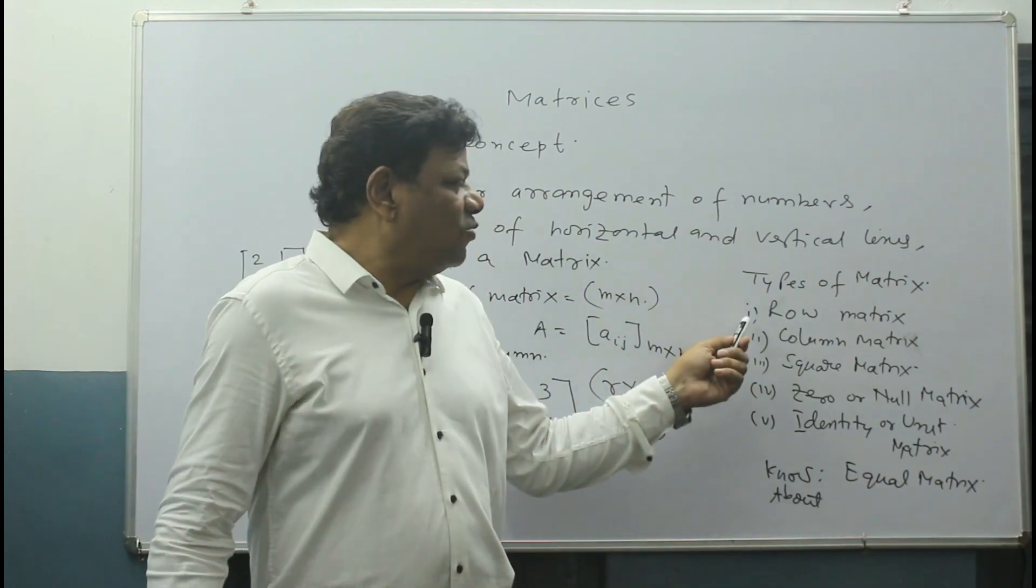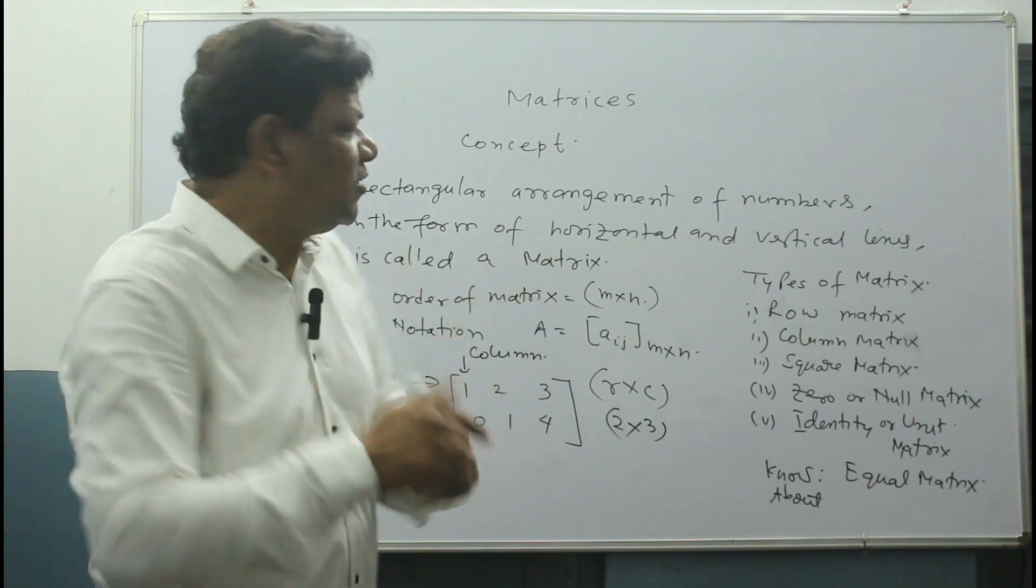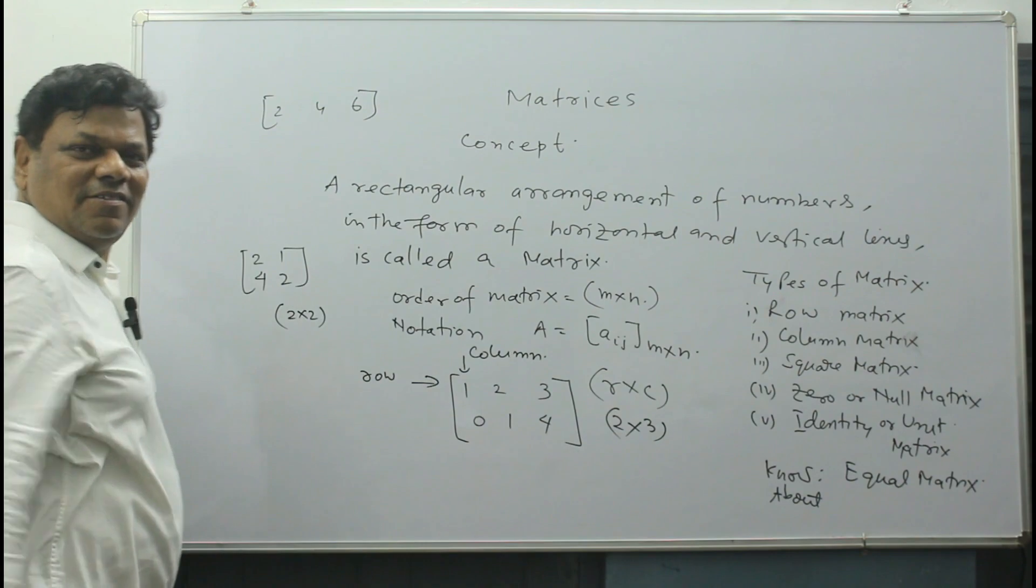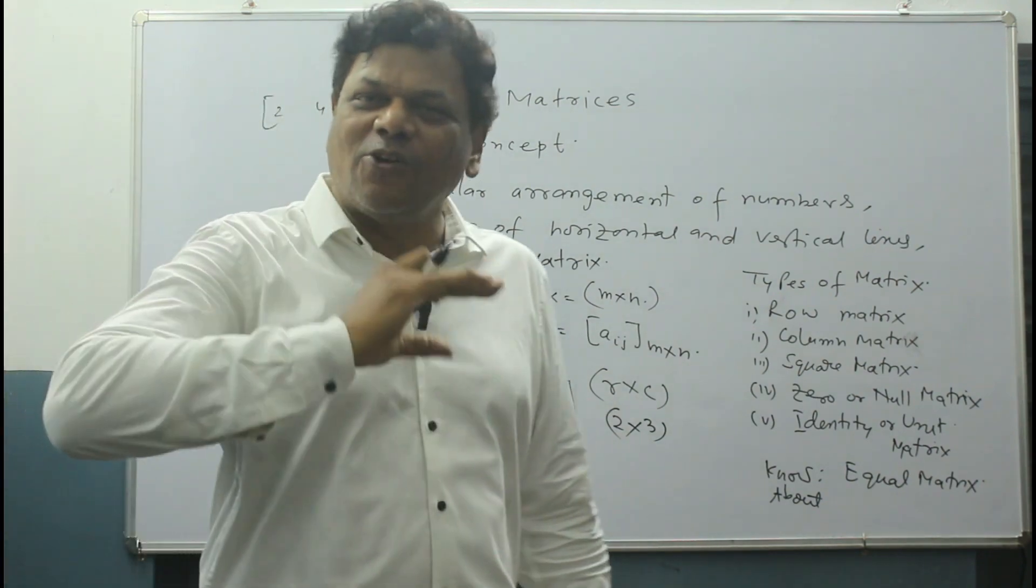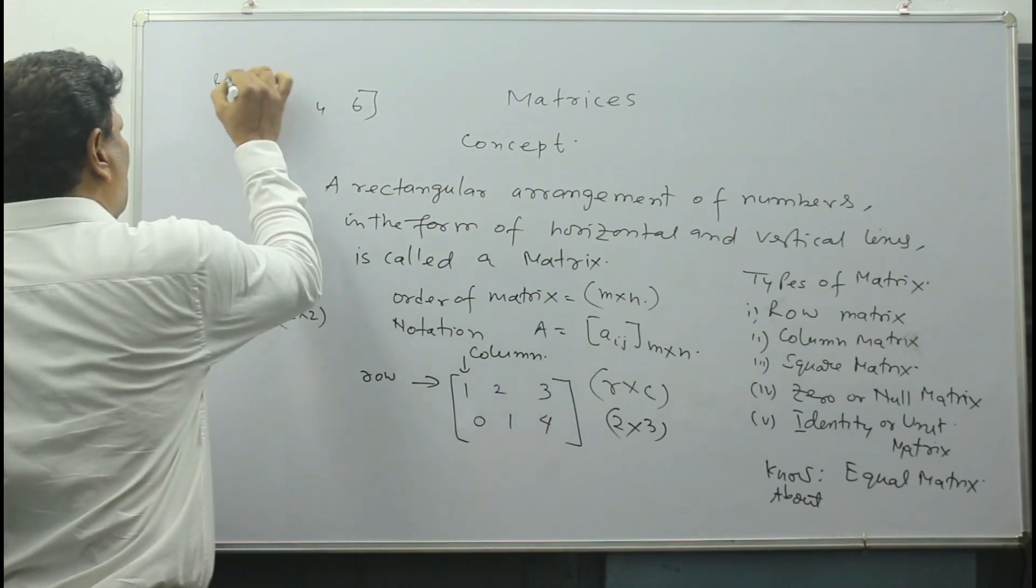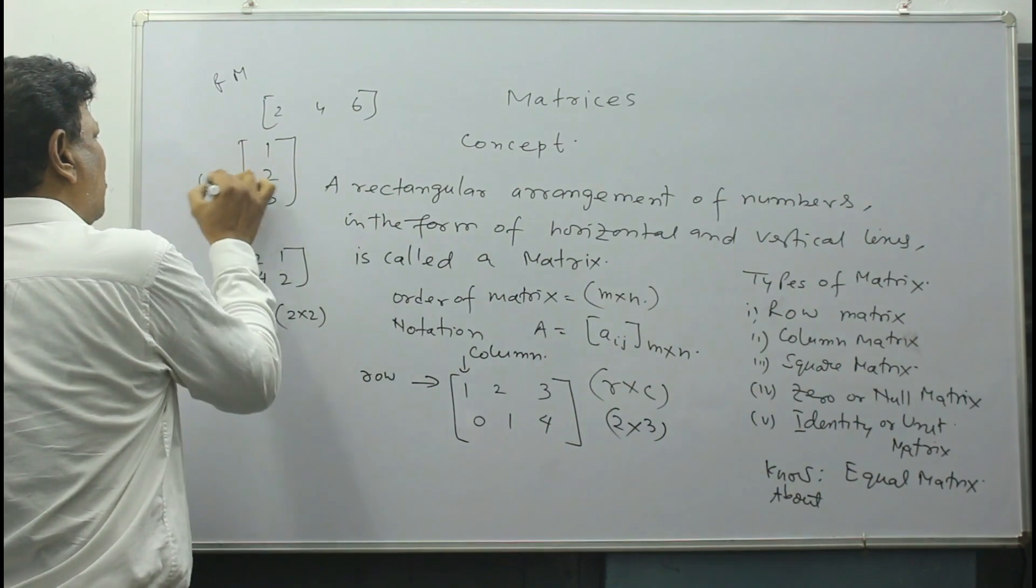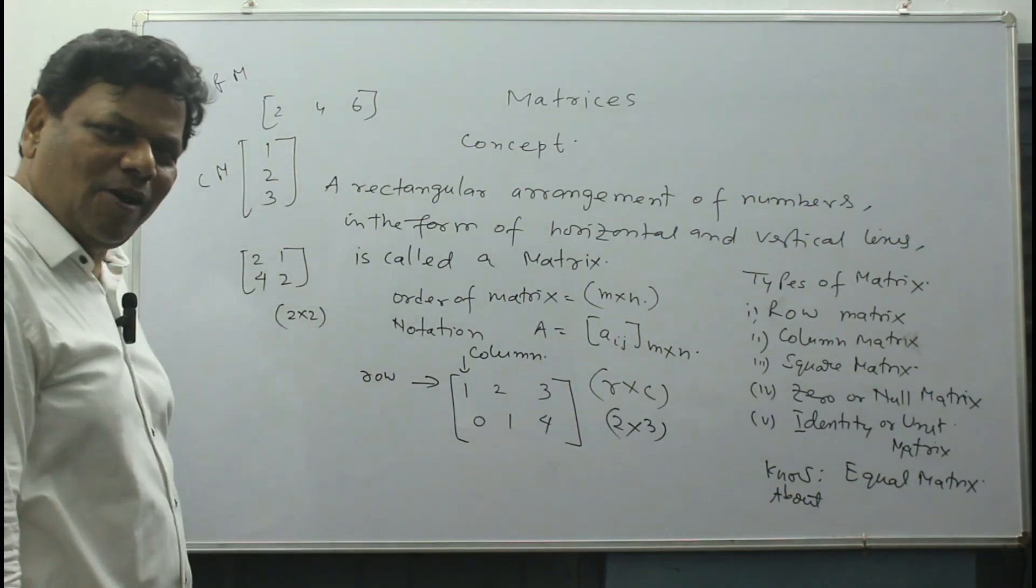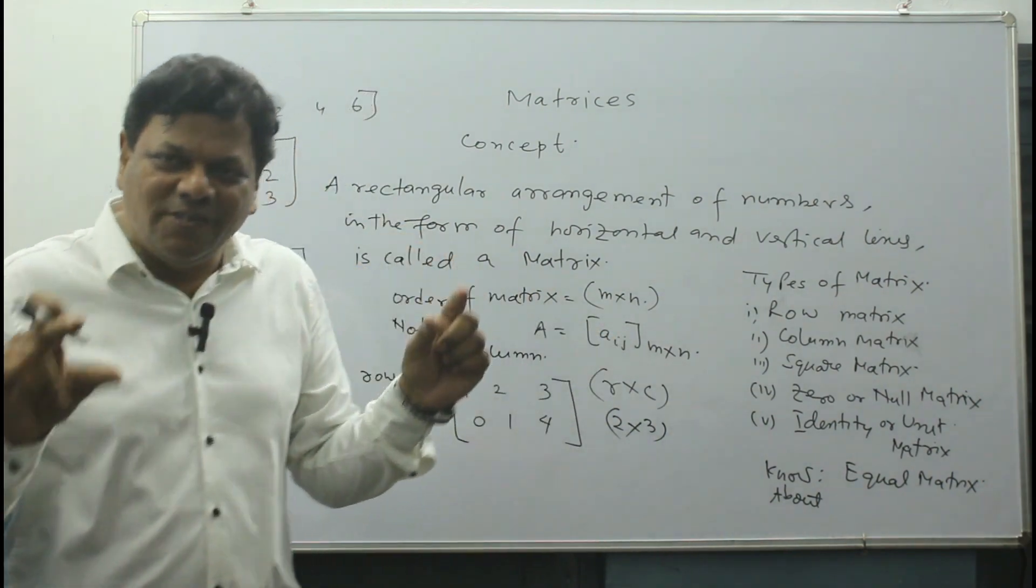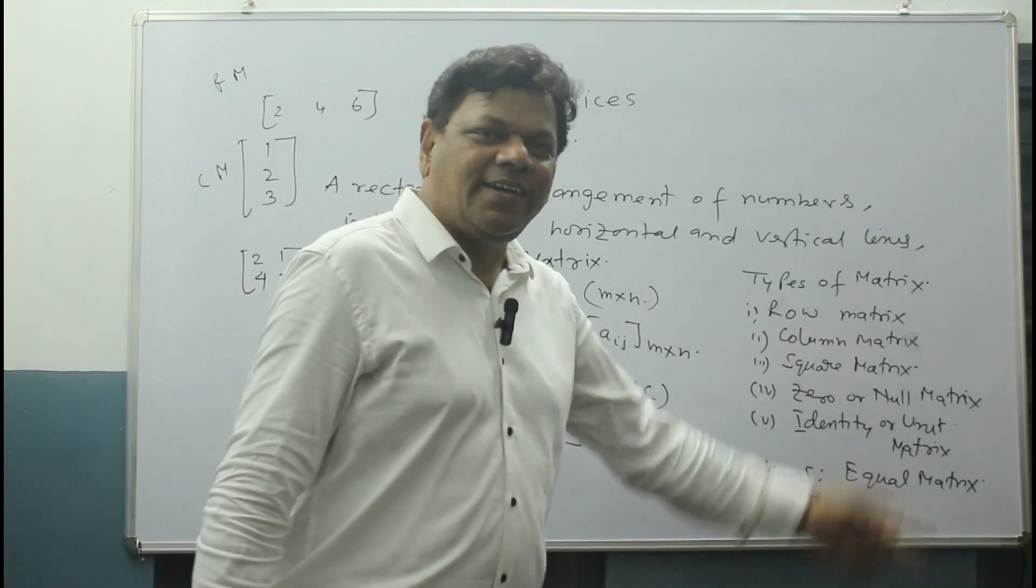Row matrix. What is a row matrix? Only one row is there, no columns—just one row. Like 2, 4, and 6. This is called a row matrix. Then what is column matrix? 1, 2, 3. This is called column matrix. Very easy. Row matrix means only one row is there. Column matrix means only one column is there.